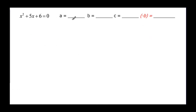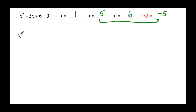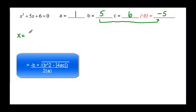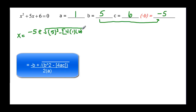So let's try. A is the coefficient on x squared, so that would be 1. B is the coefficient on x, so that's 5. C is the constant, which is 6. And negative b — just because that's part of our formula — if b is 5, then negative b is going to be negative 5. So x is equal to negative 5, plus or minus the square root of b squared — so 5 squared — minus, in brackets, 4 times a which is 1, times c which is 6, all over 2 times a, which is 2 times 1.